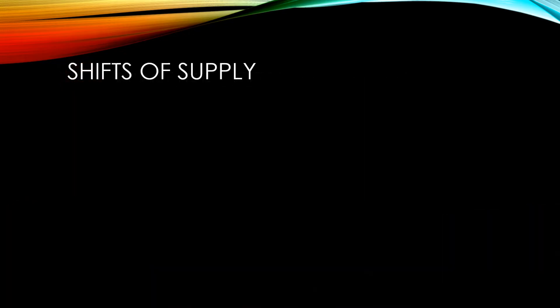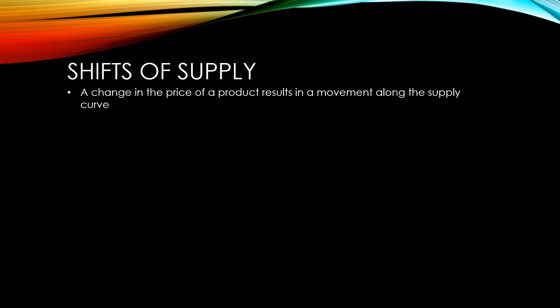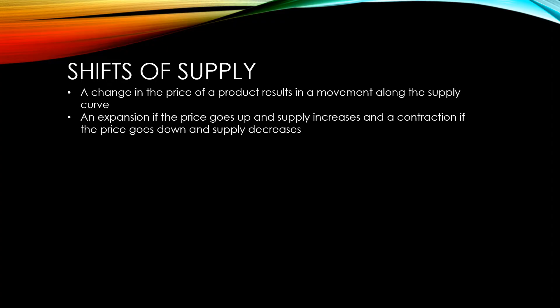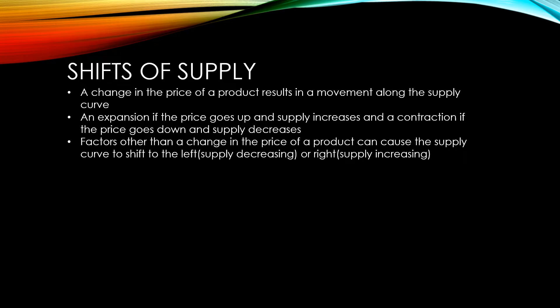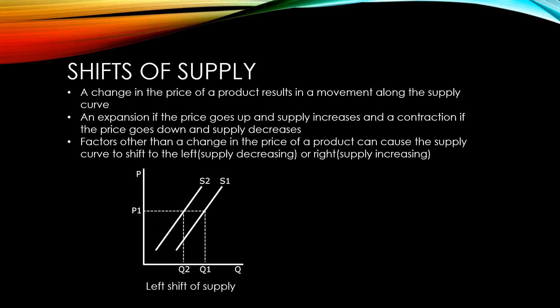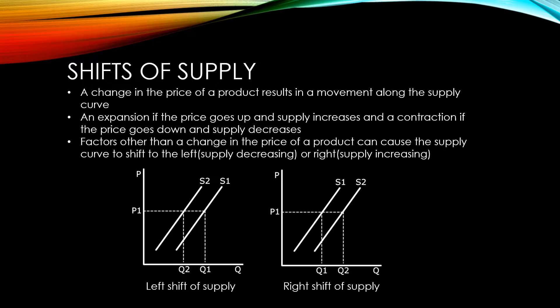As we saw in an earlier video on the introduction to supply, if the price of a product itself changes, then there will be a movement along the supply curve. This will result in an expansion of supply if the price goes up and supply increases, and a contraction of supply if the price goes down and supply decreases. There are factors other than a change in the price of a product that can cause the supply curve to shift to the left where supply decreases, or to the right where supply increases. We are going to take a look at those factors now.